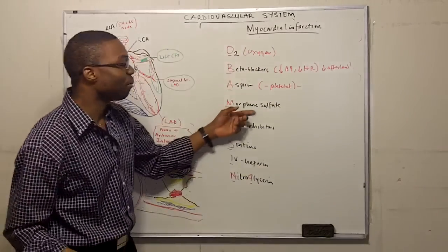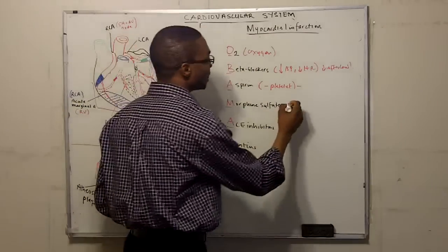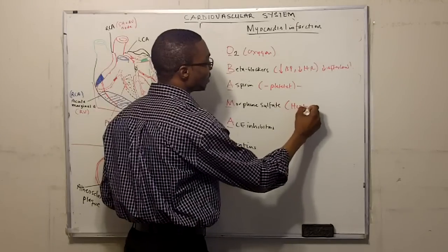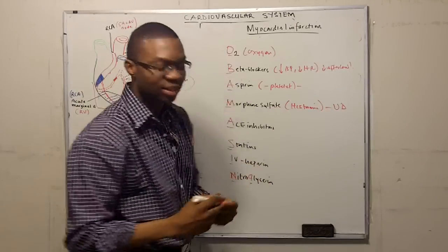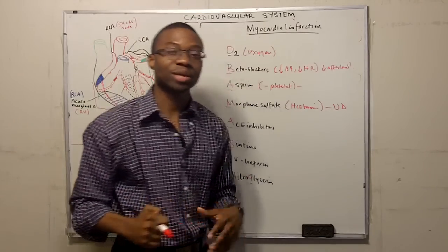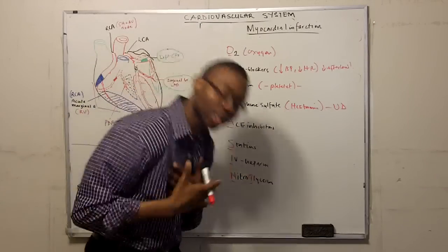You want to give them morphine. Remember morphine can cause a histamine release and it can cause vasodilation of their blood vessels. So it can decrease their blood pressure, but it also can relieve pain.